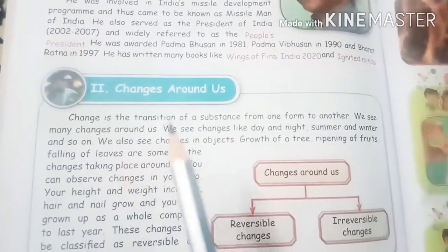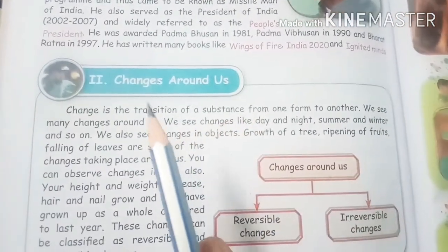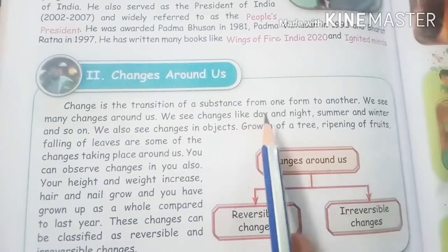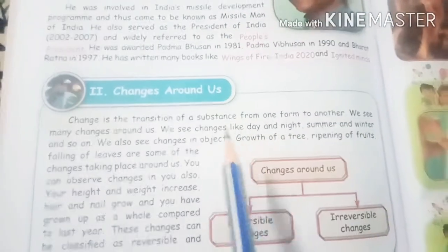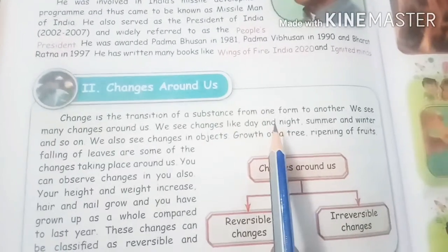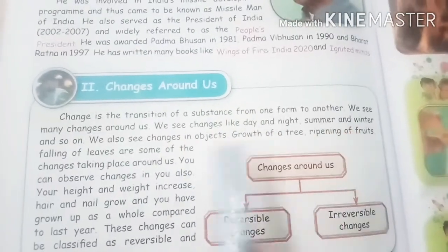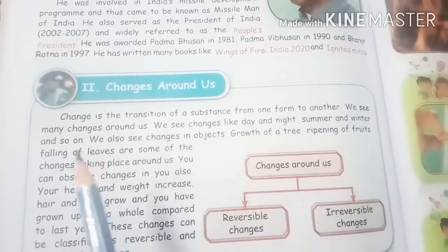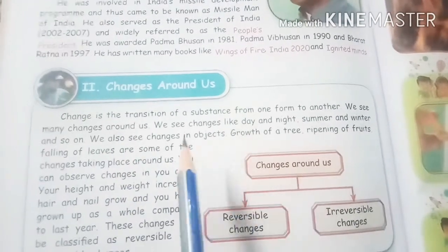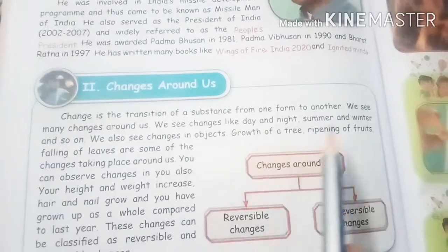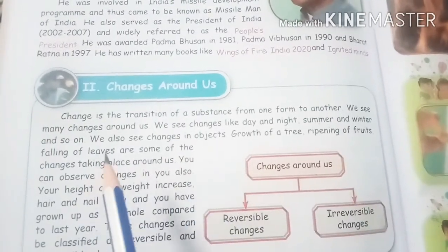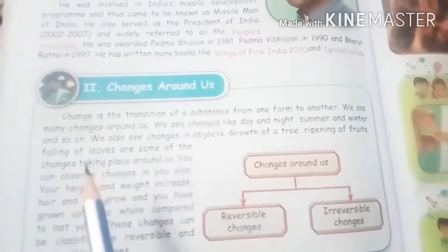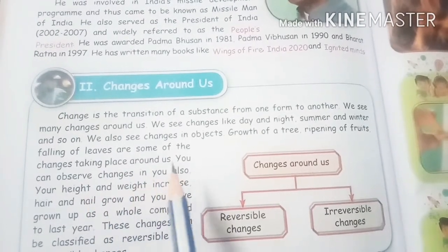Now we saw about two scientists and their contributions to our country. Let us see changes around us. Change is the transition of a substance from one form to another. We see many changes around us — changes like day and night, summer and winter, and so on. We also see changes in objects such as growth of a tree, ripening of fruits, and falling of leaves.